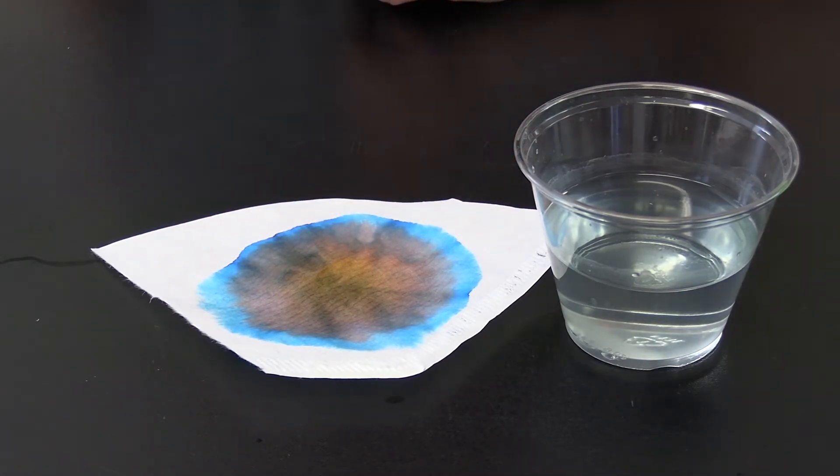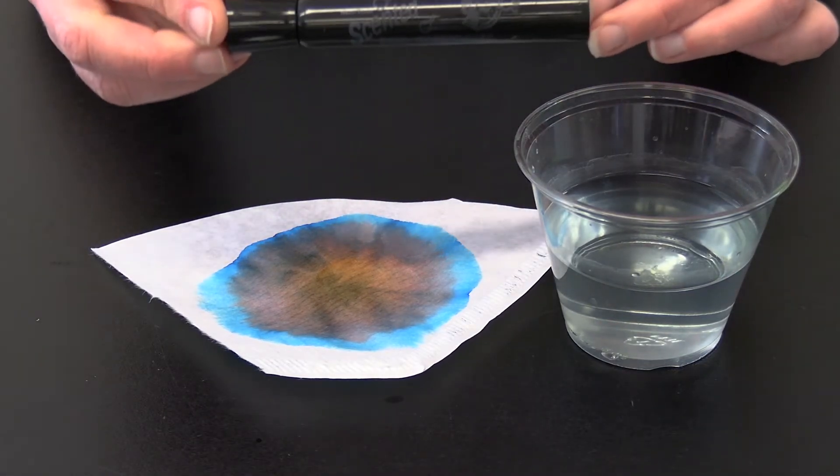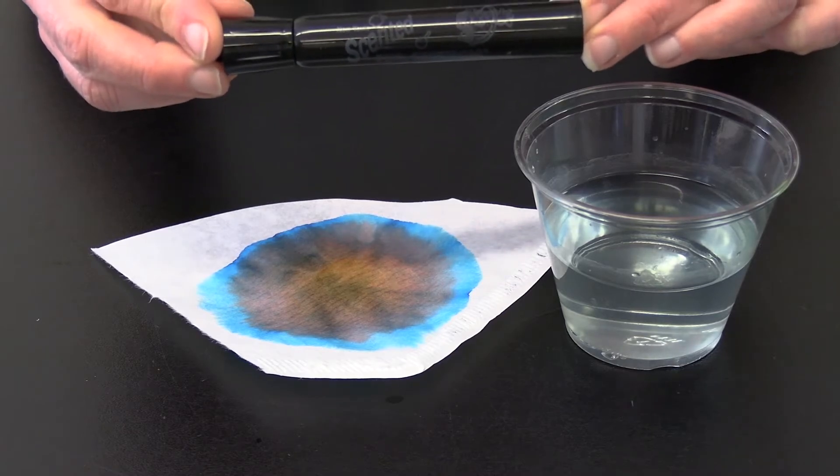Those lighter molecules moved further to the edge. Those are our blues and our pinks. And the heavier molecules stay toward the center. Those are the oranges and a light brown. All the colors that you see on this paper are the colors that were mixed together to make this black magic marker.